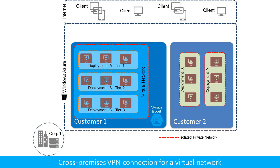For virtual networks, you can also configure a cross-premises encrypted VPN connection. This makes the subnets and virtual machines in the virtual network an extension of your organization network, similar to a branch office.